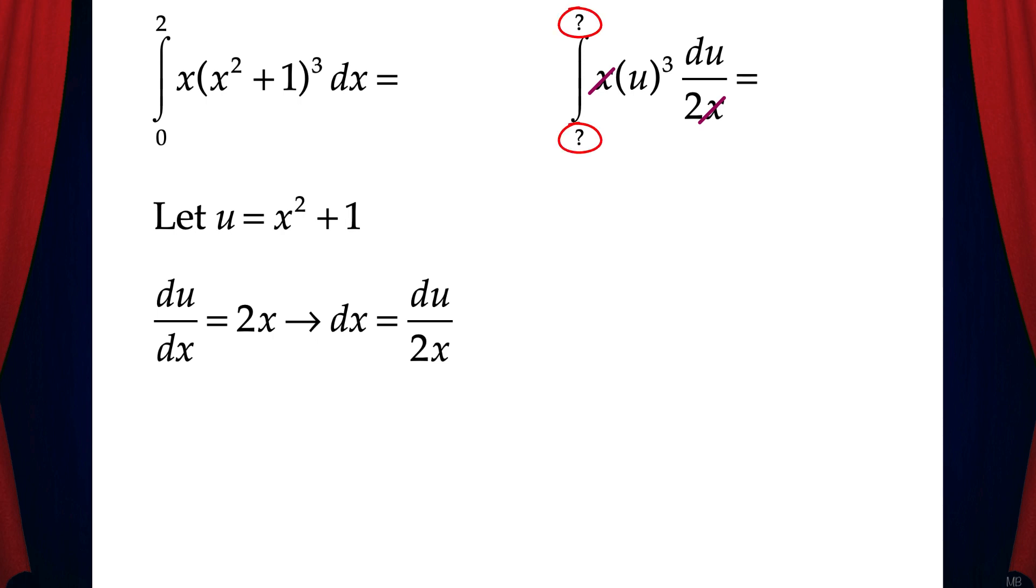But remember, we need to change the limits of integration. So we'll make a chart: x and u equals x squared plus 1. Then we'll put 0 and 2 in the x column and we'll determine u. When x equals 0, u equals 1. And when x equals 2, u equals 5.